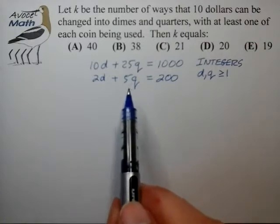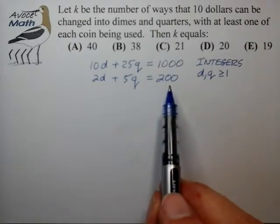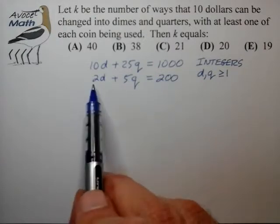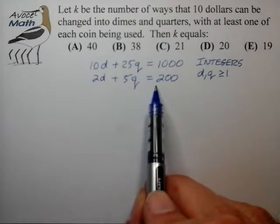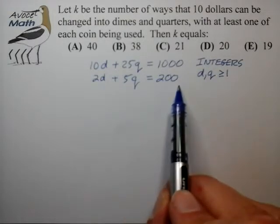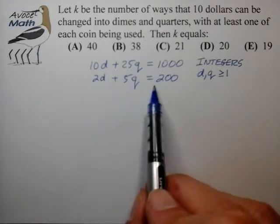The next thing we notice is that this is one of the more convenient linear two-variable Diophantine equations where at least one of the coefficients on the left side divides evenly into the constant term on the right side. In fact, both of these coefficients divide evenly into the right side.